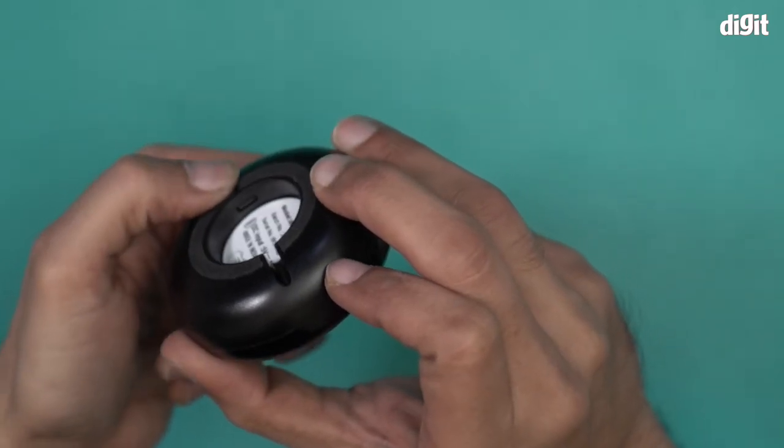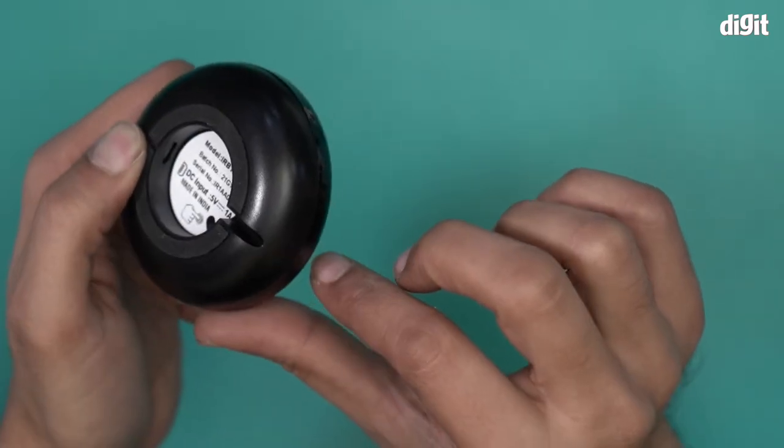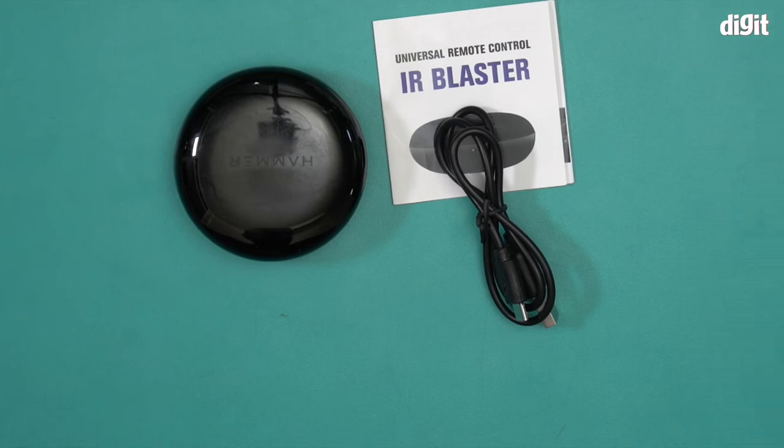The cable will run through this area when you want to charge it. This is what you'll find inside the box containing the Hammer Wi-Fi remote. Thank you for watching.